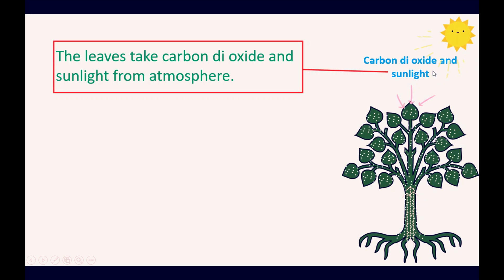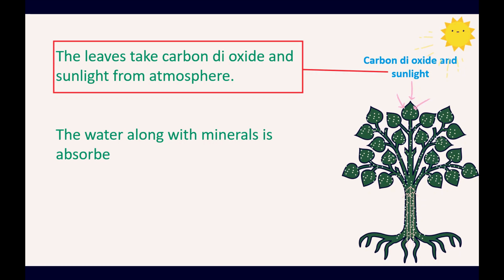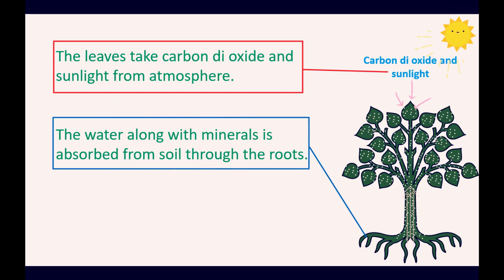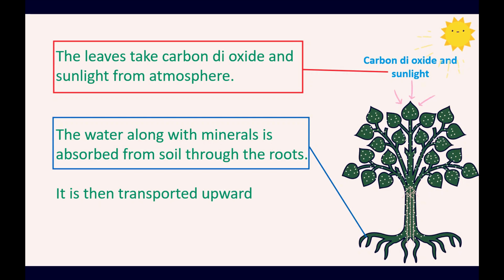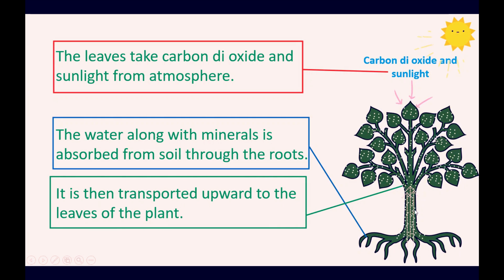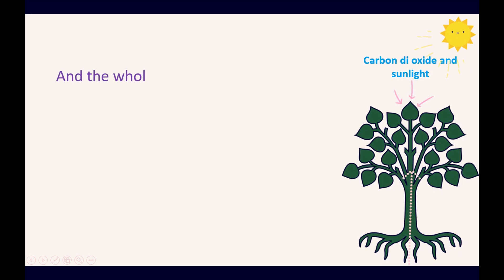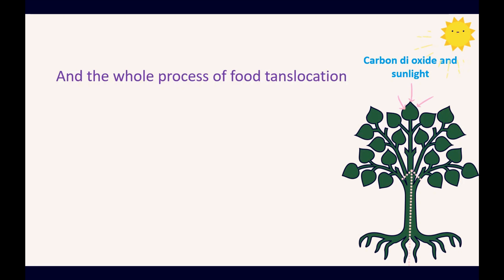The water along with minerals is absorbed from the soil through the roots. It is then transported upward to the leaves of the plants. As you can see through the picture, water and minerals absorbed by the roots are transported upward to the leaves of the plants.